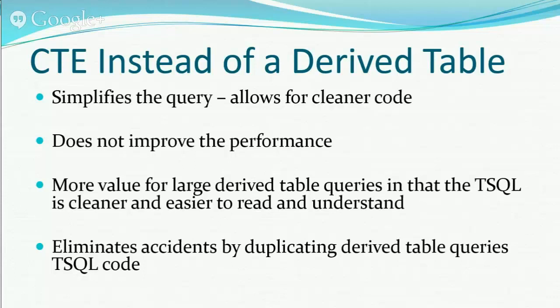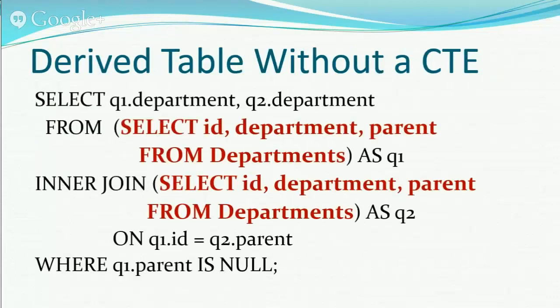Those are just a pain to maintain. So let's take a look at how we can do this. Highlighted in bold is a derived table subquery that's replicated twice here — and you can imagine it could be used four, five, ten times in a bigger query. It's error prone, and the bigger the query gets, the more error prone it gets.